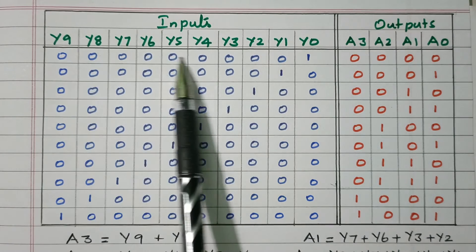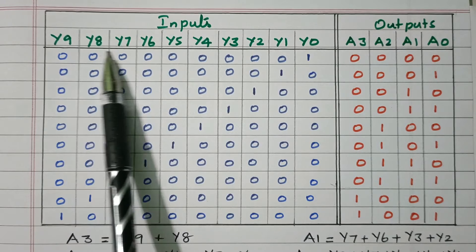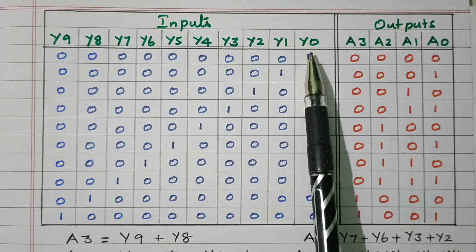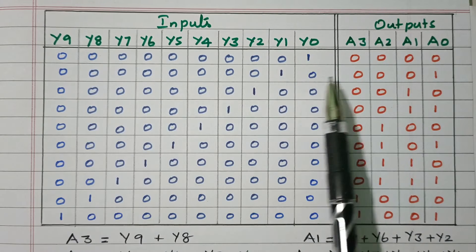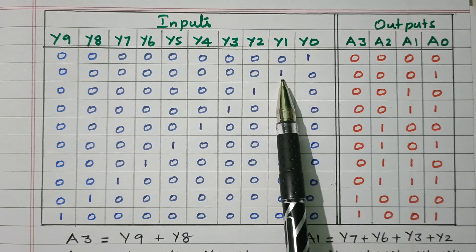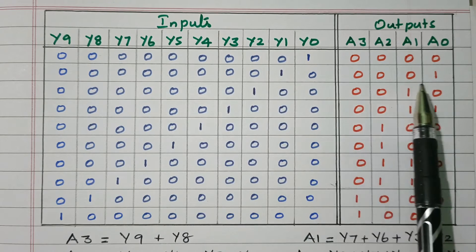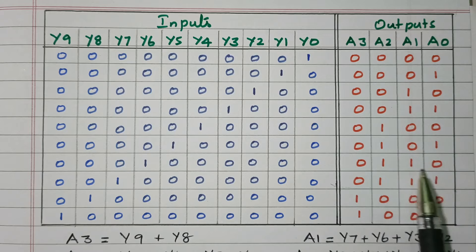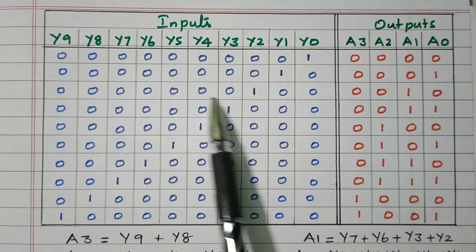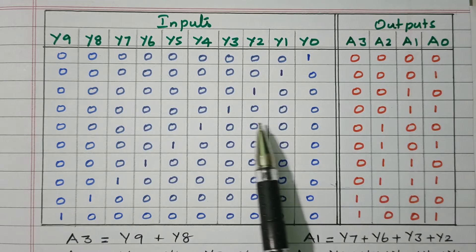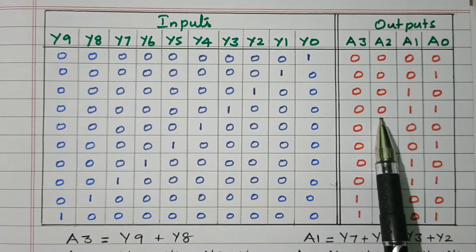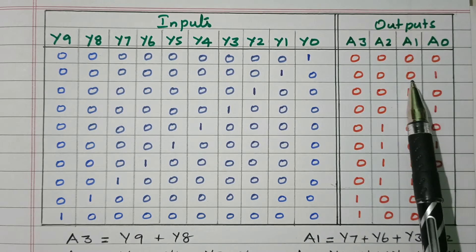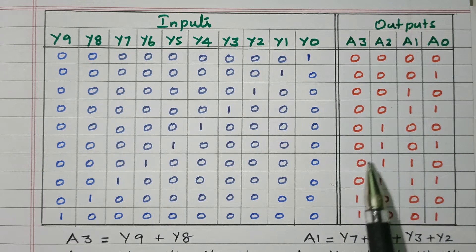The truth table has 10 different inputs Y0 to Y9 and four-digit outputs A0, A1, A2, A3. If Y0 is 1 and all other inputs are 0, we get 0000. If Y1 is 1 and other digits are 0, we get 0001. If Y2 is 1 and remaining digits are 0, we get 0010. If Y3 is 1 and remaining digits are 0, we get 0011.